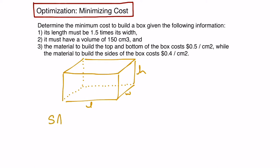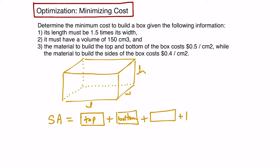The surface area will be the area of the top of the box plus the area of the bottom of the box — visible here in our diagram — plus the area of the front, the back, the left side, and the right side. The total surface area is the sum of all six sides of the box.